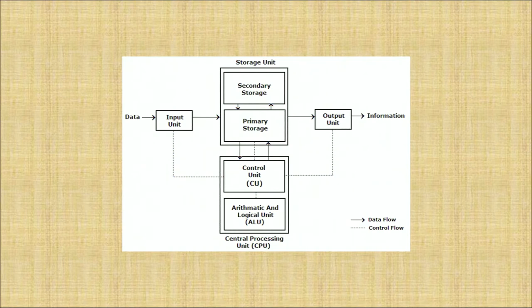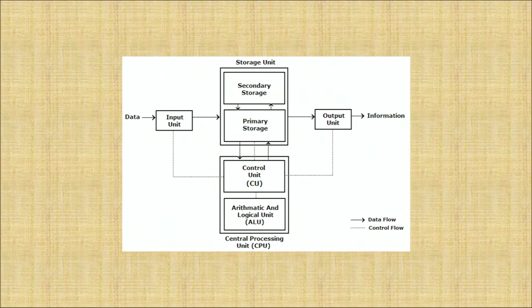What do we mean by data and what do we mean by information? Data is raw data — what we collect from here and there is the data. What we get as an output is information. Information is always a meaningful result of the raw data that we have input into the computer system.